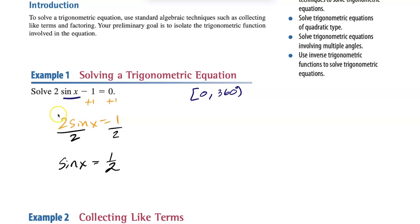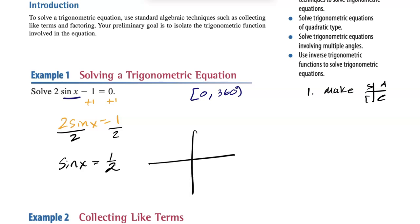From here, we're basically going to solve it in reverse. We're going to first make a chart using 'All Students Take Calculus' to identify correct quadrants, then make triangles in the correct quadrants.